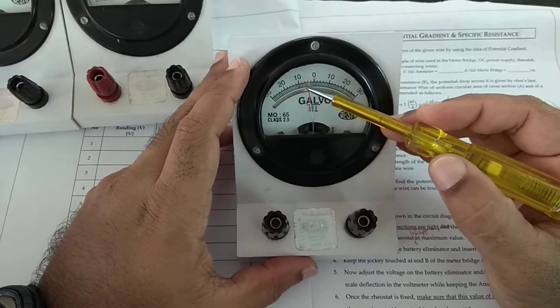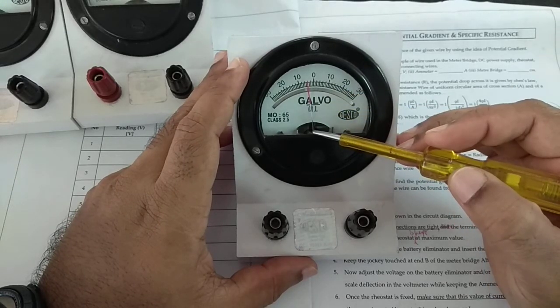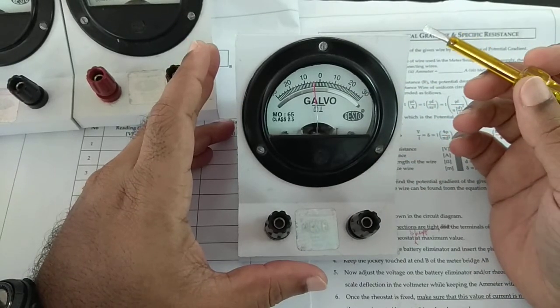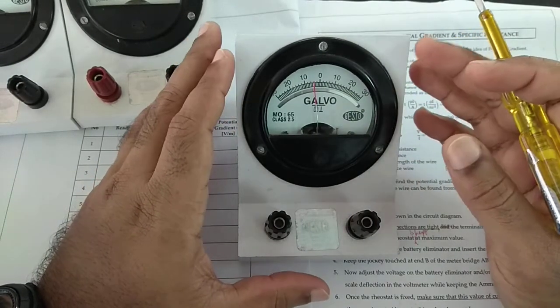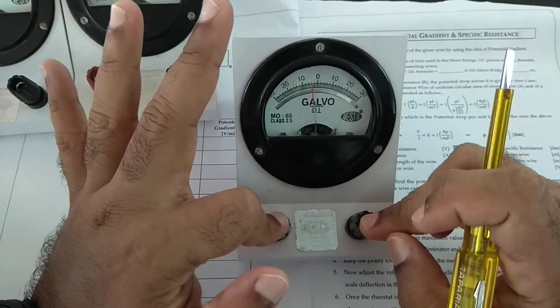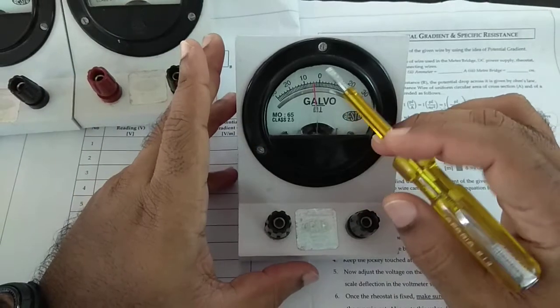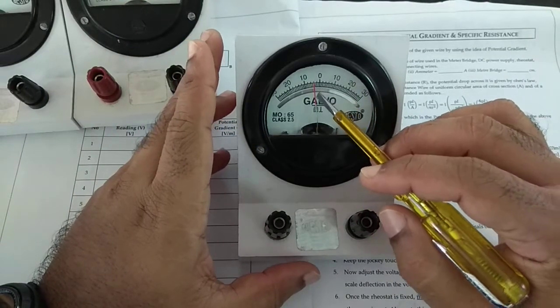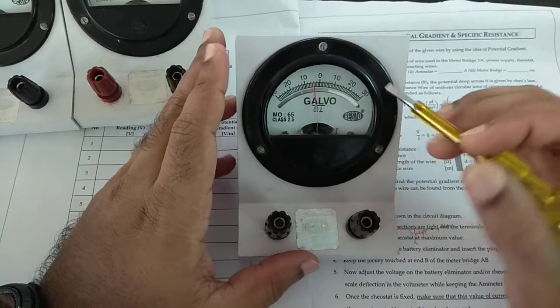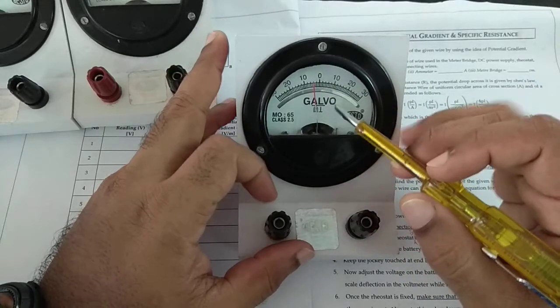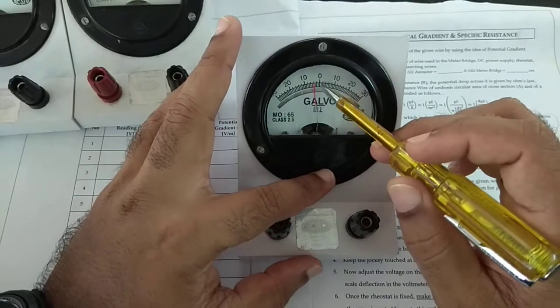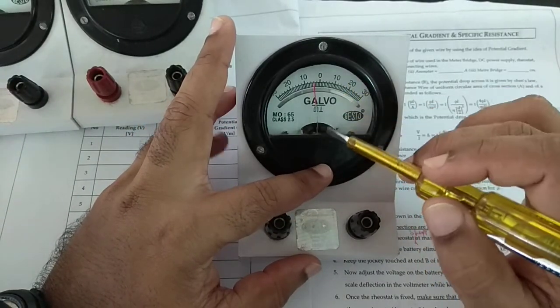You may notice that this needle is not at zero. That's not a crisis as far as the galvanometer is concerned, because a null deflection point, when no current passes through the galvanometer, is not a point where the needle is at zero. It is a point where the needle does not move at all.